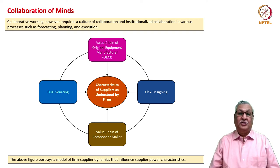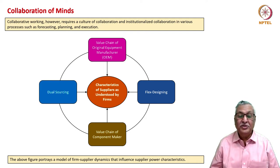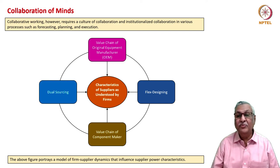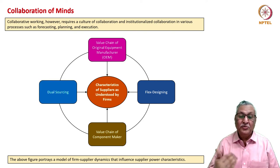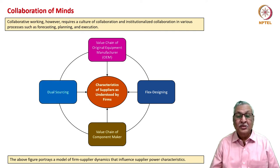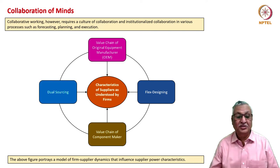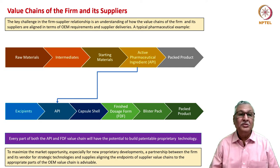There is a culture of institutionalized collaboration with four aspects. First, the value chain of the OEM must be clearly understood. Similarly, the value chain of the component maker must also be clearly understood — both suppliers and OEMs must understand both aspects. OEMs may prefer dual sourcing but that should be accompanied by flex designing. This cultural collaboration is required among all constituents of the supplier ecosystem.